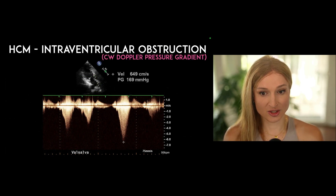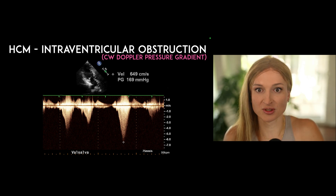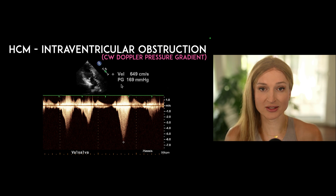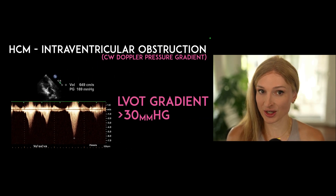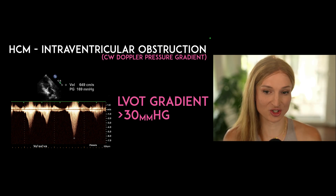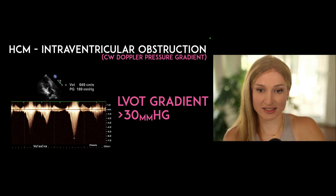We can also look at the peak velocity to identify the LVOT gradient. You can see it has already measured the peak gradient — it's pretty high, 170 millimeters of mercury in this patient. If you have an LVOT gradient greater than 30, that's one of the ways you can diagnose it. If it's greater than 50, you can be more confident it is hemodynamically significant, but greater than 30 is a diagnostic criterion as well.